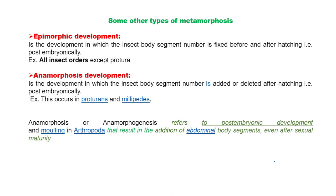Epimorphic development is the development in which the insect body segment number is fixed before and after hatching. But in anamorphic development, the insect body segment number is added or deleted after hatching. Epimorphic development is seen in almost all insect orders except in Protura. Anamorphic development is seen in Proturans and in millipedes.